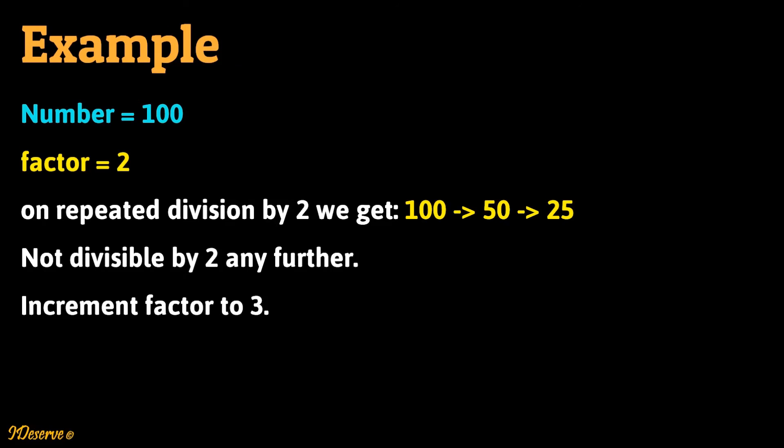Let's take one example to understand and visualize the algorithm. Consider the given number as 100. We initialize factor to 2. On repeated division by 2, the number 100 first gets reduced to 50 and then to 25. Since the number 25 is not divisible by 2 any further and the number is not reduced to 1, we increment factor to 3.